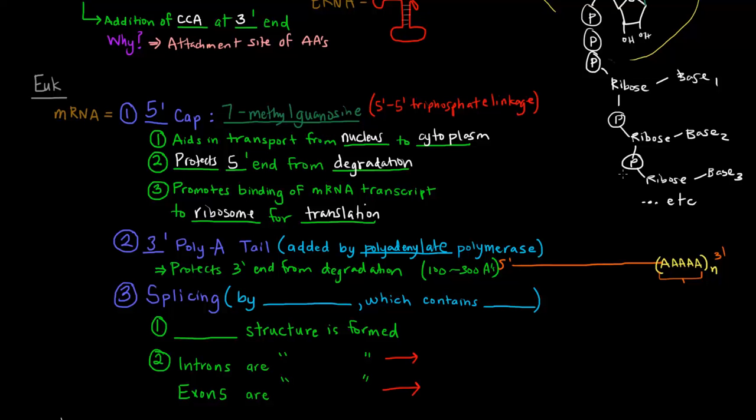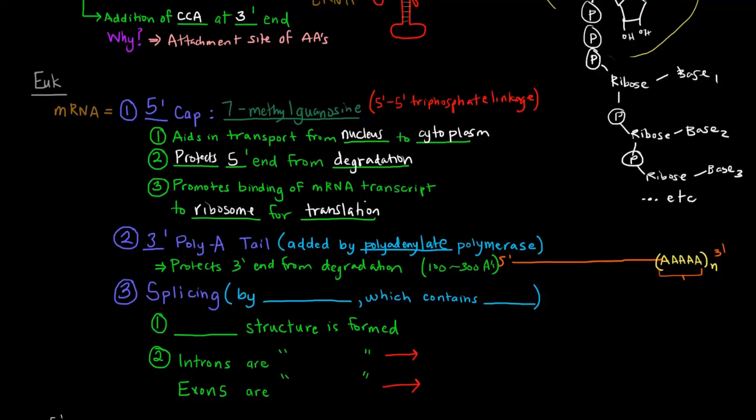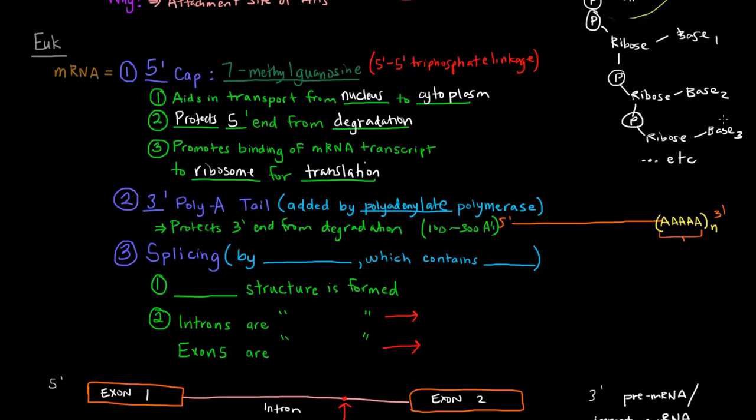The third modification to mRNA in eukaryotes is splicing. The mRNA transcripts are spliced. This is carried out with this thing called the spliceosome, which contains these things called SNRPs. S-N-R-N-P. SNRPs, that stands for Small Nuclear RNAs and Proteins.